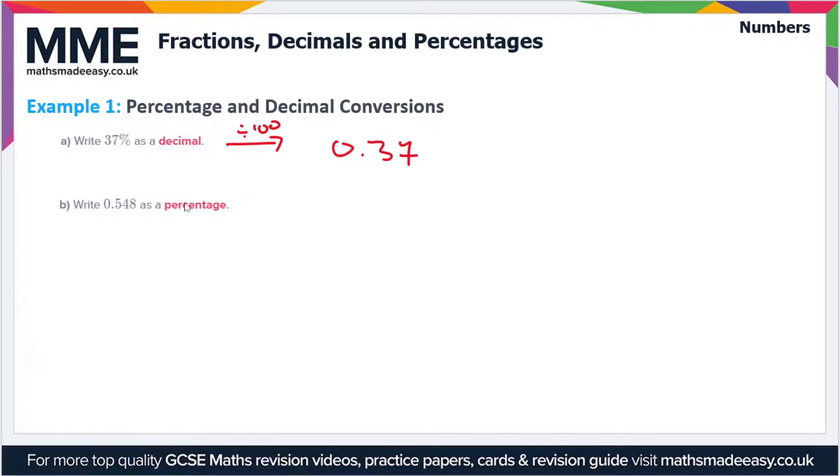And then part b: write 0.548 as a percentage. Well, to go from a percentage to a decimal we divide by 100, so to go the other way we have to times by 100. So 0.548 times 100 is 54.8%. That's simple enough. Let's move on to the second question.